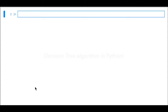Hello everyone. Now we're going to code the algorithm presented in the previous videos that, given a database, builds automatically a decision tree for classification.